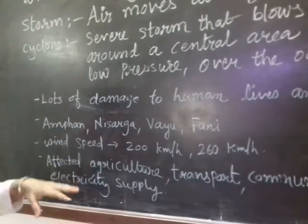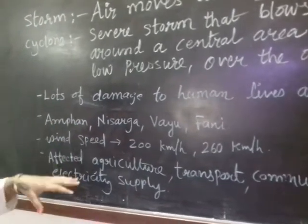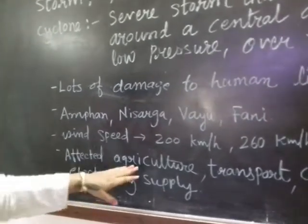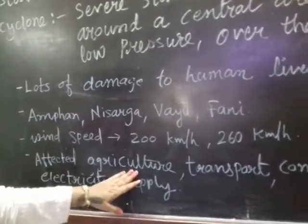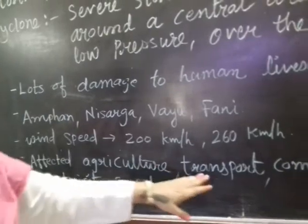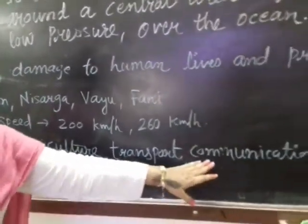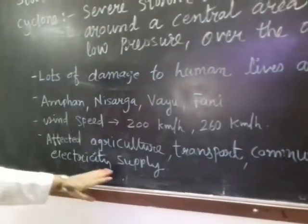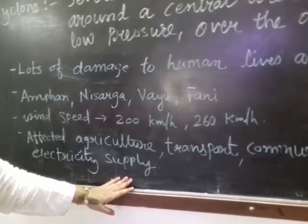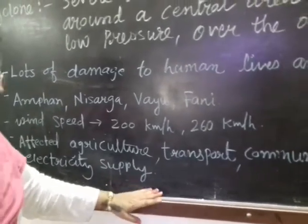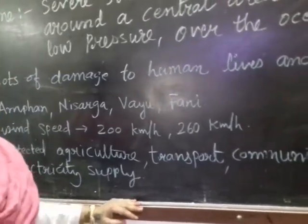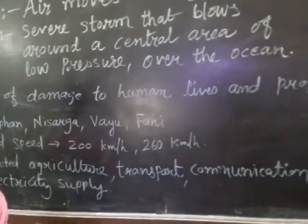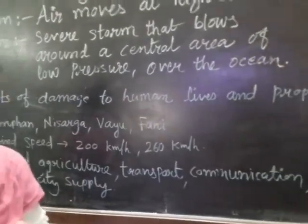How does a cyclone affect our lives? Most of the area is affected. There is agriculture damage, transportation damage, communication damage, and loss of electricity supply. There is huge loss of not only human lives but also significant property loss.